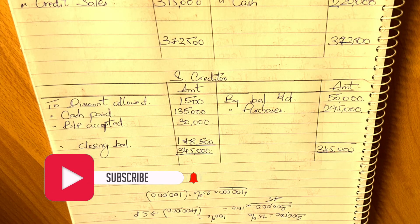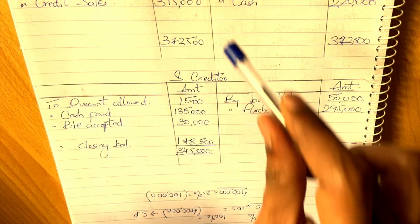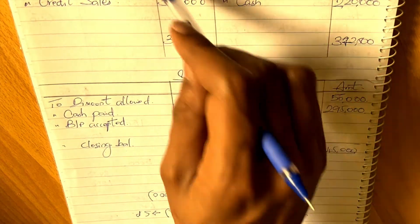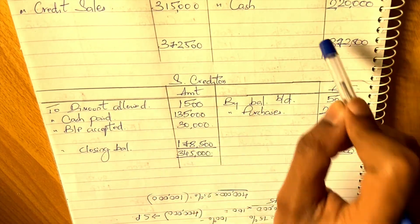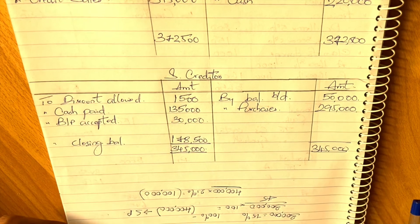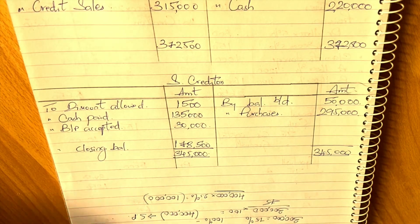So that's how we find missing figures in accounts from incomplete records. When complete records are not maintained, we prepare accounts using available data to find the missing balances. This was one simple problem; the next one involves preparing complete final accounts from incomplete records.